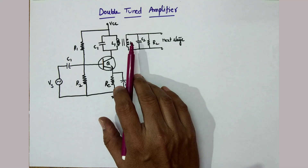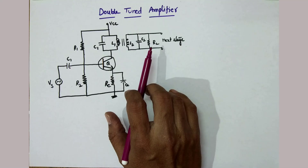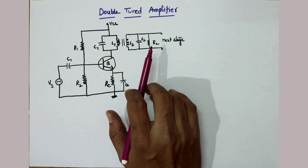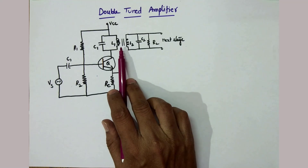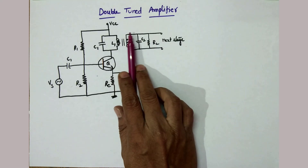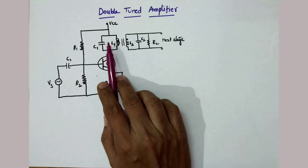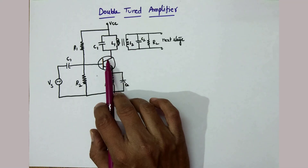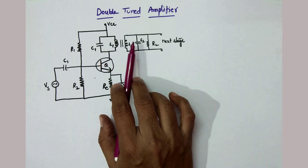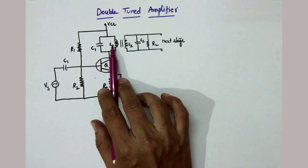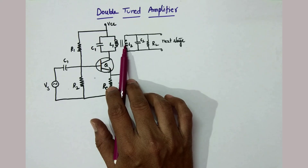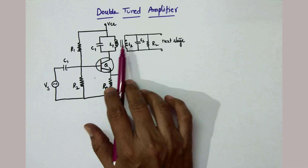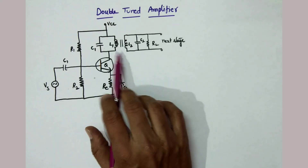Another point is: in the last video of single tuned capacitive coupled amplifier, it is a single stage of the multi-stage tuned amplifier where the first stage is connected to the next stage through a capacitor. But if you see this circuit, the output of the first stage is connected to the next stage through a transformer. One tuned circuit is connected as a load to the transistor, and the other tuned circuit gets the signal because of mutual inductance between the two inductors. So this is a transformer coupled tuned amplifier because the first stage is connected to the next stage through this transformer arrangement.